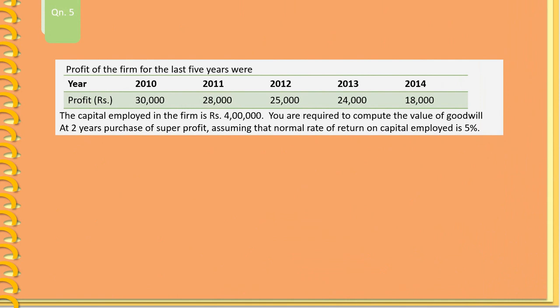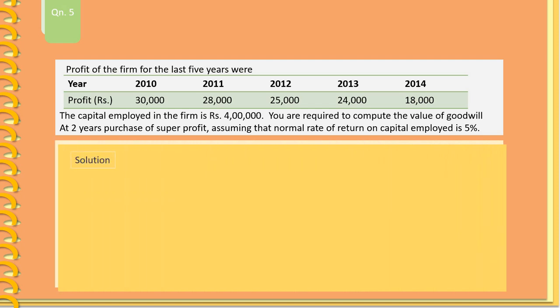Question 5: Profits of the firm for the last 5 years were Rs. 30,000, Rs. 20,000, Rs. 25,000, Rs. 24,000, and Rs. 18,000. The capital employed in the firm is Rs. 4,00,000. You are required to compute the value of goodwill at 2 years purchase of super profits, assuming that the normal rate of return on capital employed is 5%.